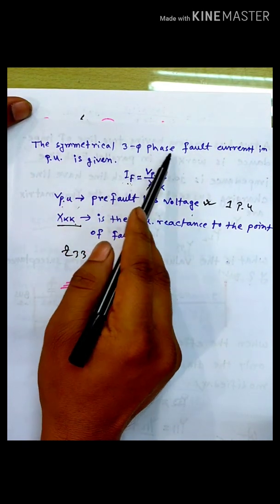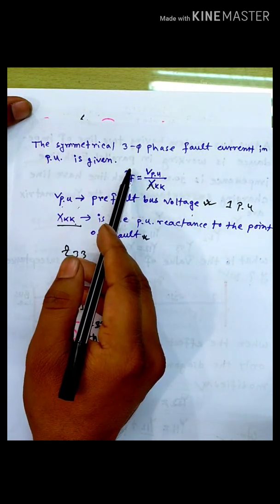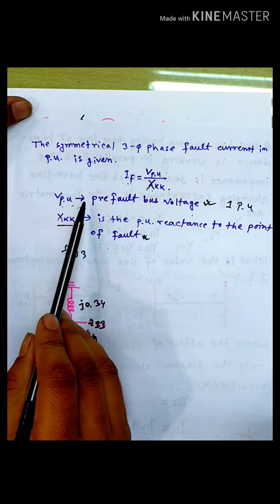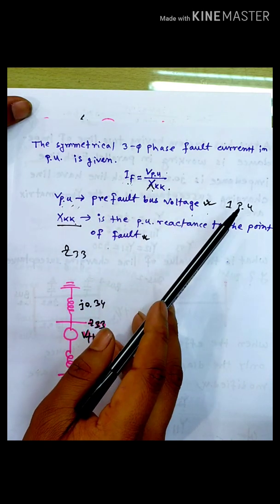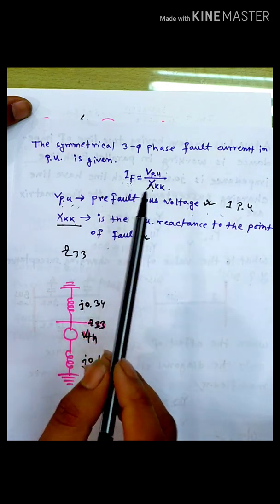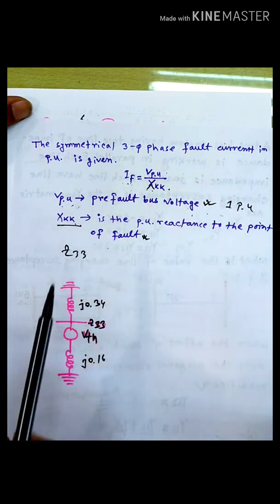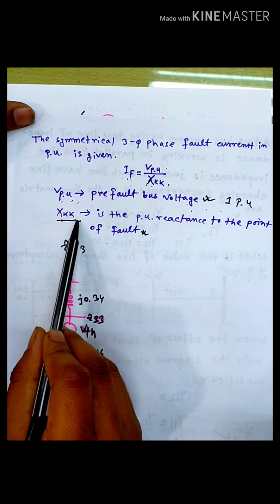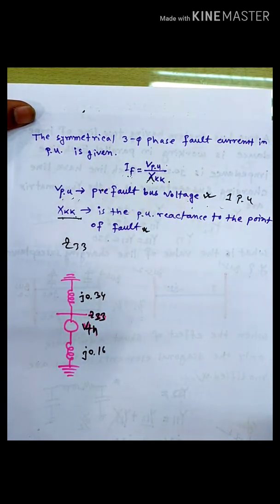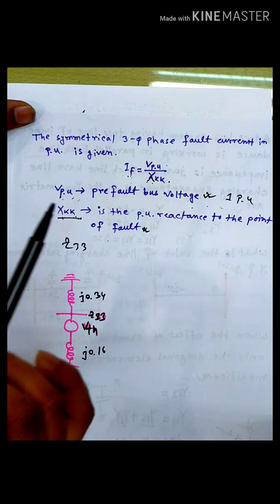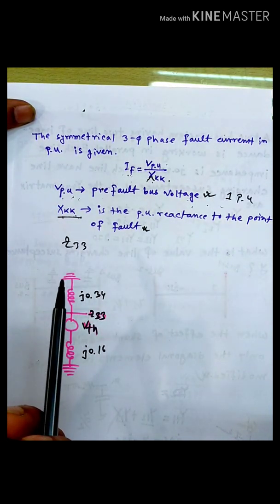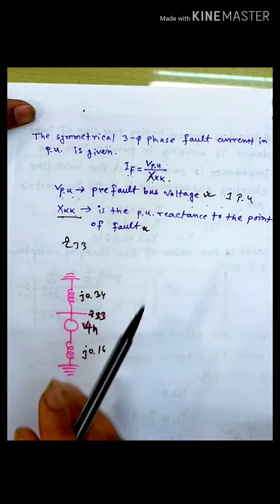The symmetrical 3-phase fault current in per unit is given by V per unit divided by x. This is the pre-fault voltage in per unit. If you have the pre-fault voltage in per unit, then you assume 1 per unit. The x_kk is the per-unit reactance to the point of fault. The total equivalent reactance to the point of fault — x_kk is the total equivalent.